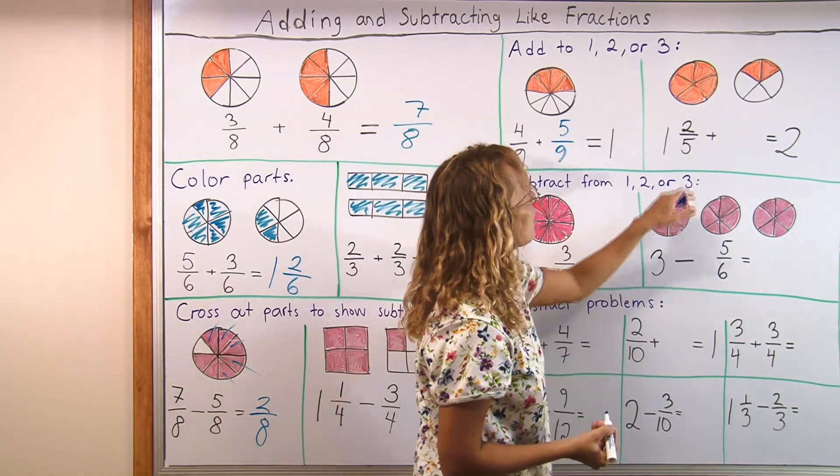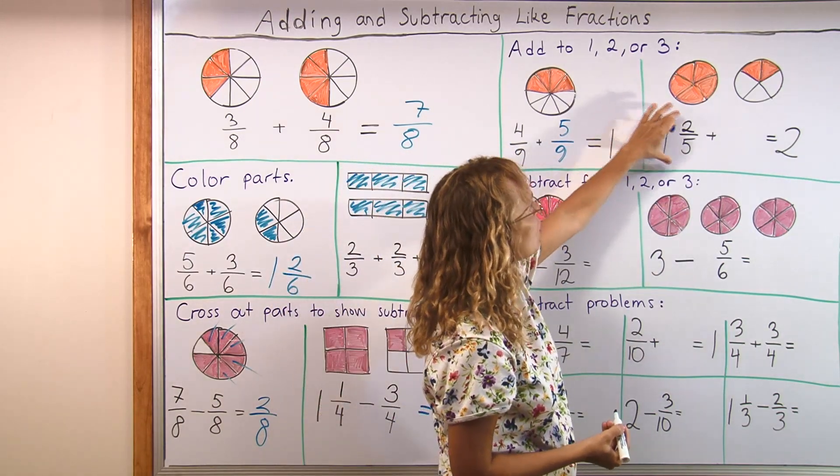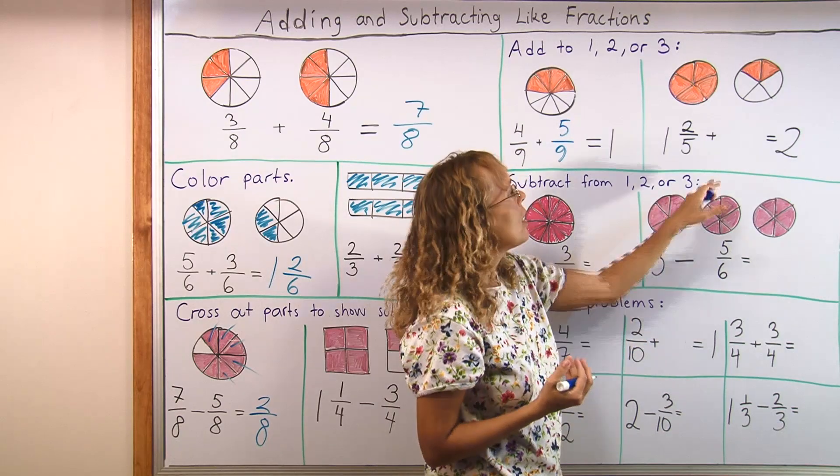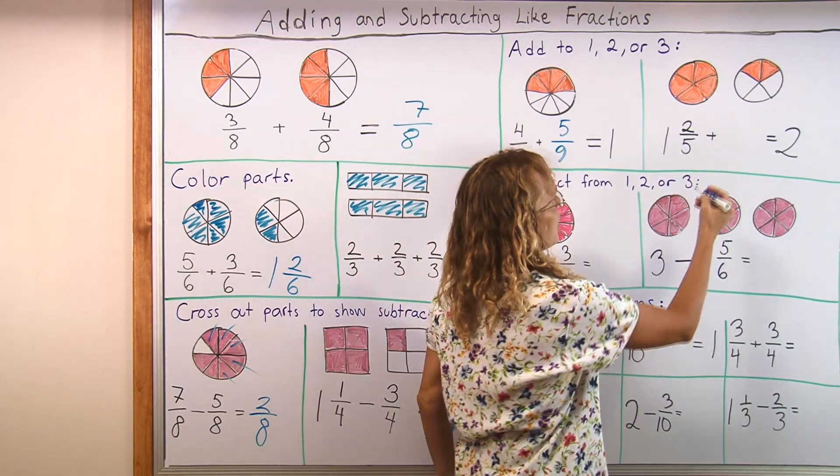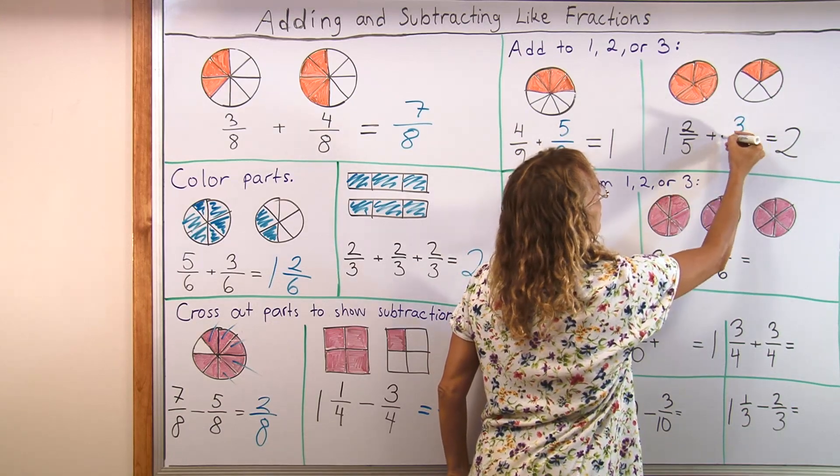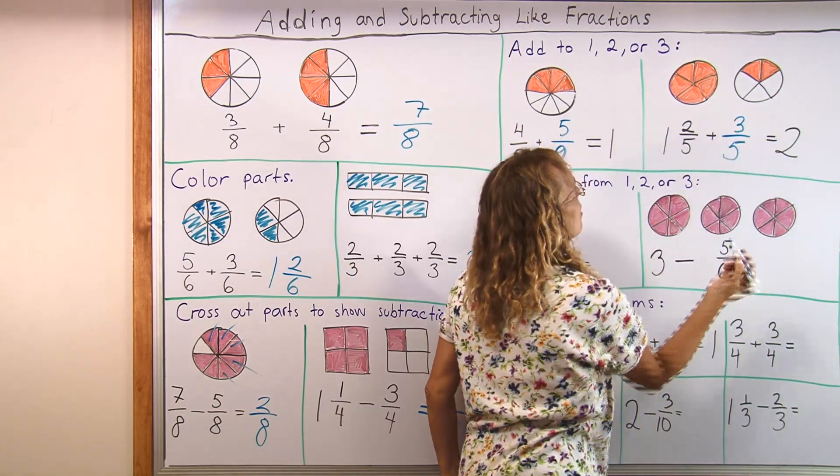And here in this picture, similarly, we have 1 and 2 fifths already colored. And I'm asking how much more is needed to get 2. It is easily seen as 3 fifths.